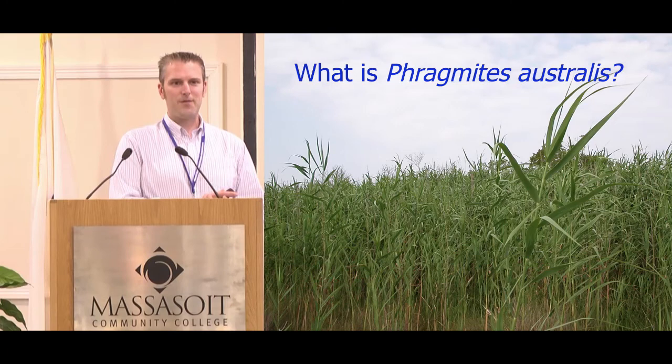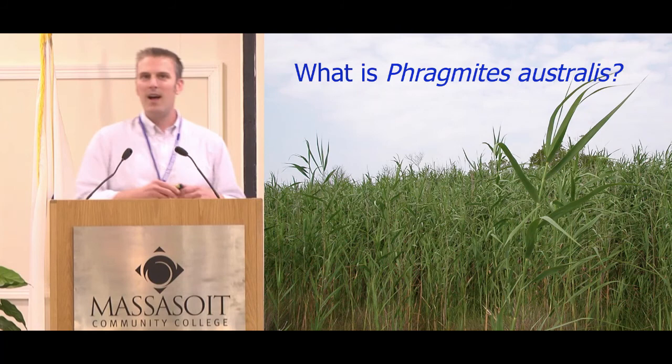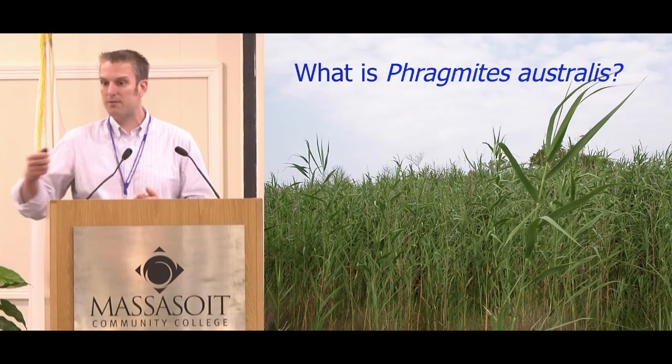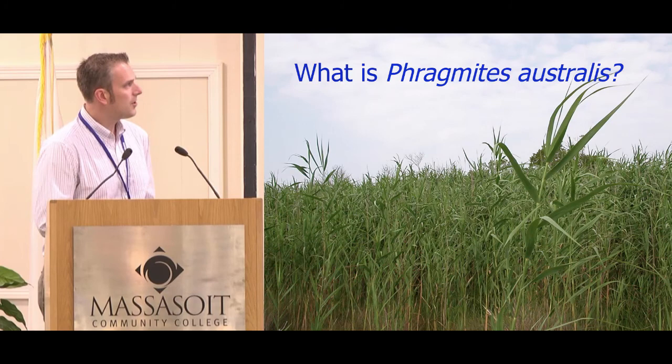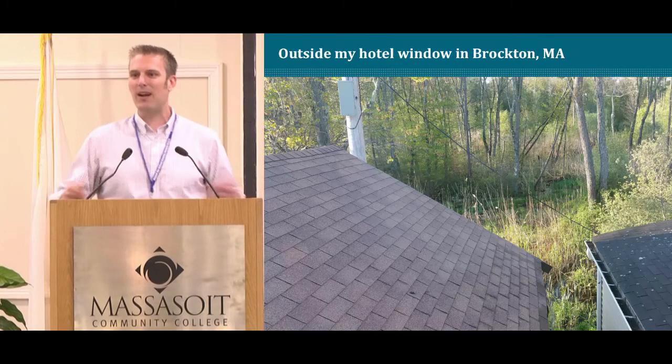The invasive species I'll be talking about is Phragmites australis. It's the world's most widely distributed flowering plant, found on every continent except Antarctica. It's a C3 plant, so it has the potential to respond to CO2, and research shows it responds to nitrogen as well. You can see it sitting in roadside ditches going into New Jersey — it's everywhere, which is basically job security for me.